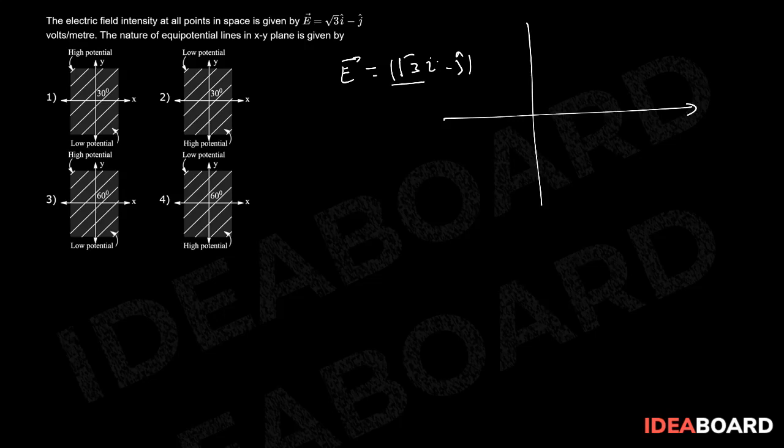If I write the points then points will be root 3 comma minus 1. Root 3 will be like this if this is x axis, this is y axis and minus 1 will be like this. This is our point root 3 comma minus 1.